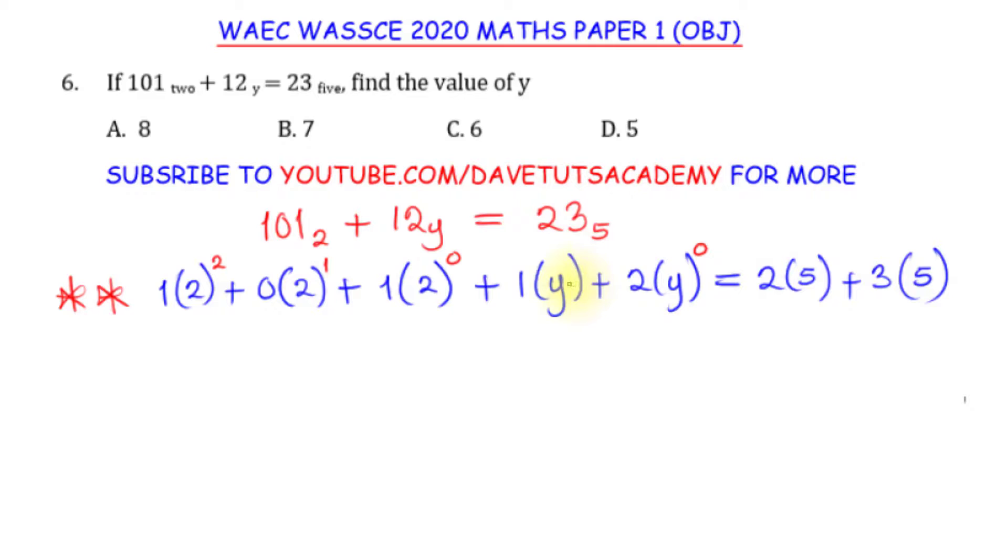And then for the right hand side also, we start from 3, the 5 will take the power of 0, and this 5 will take the power of 1. So if we have that, we can now go ahead to solve the question.